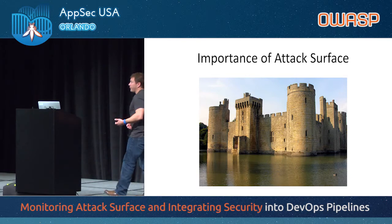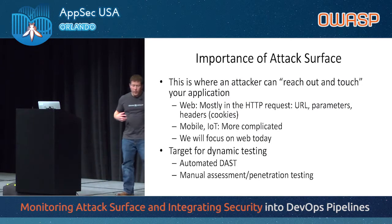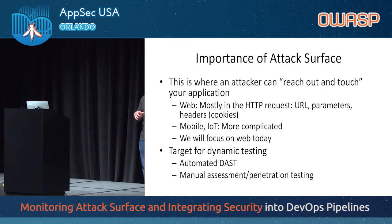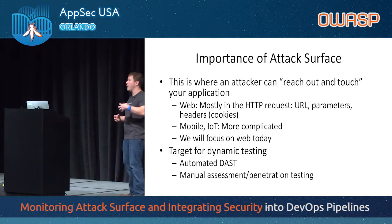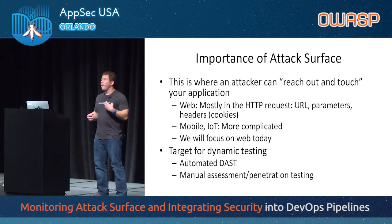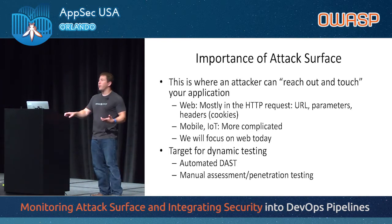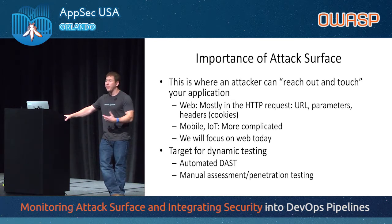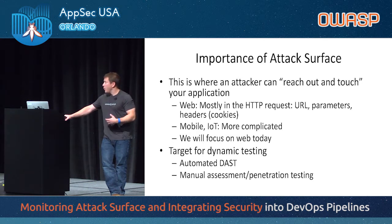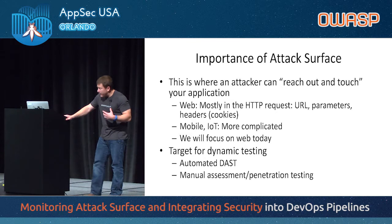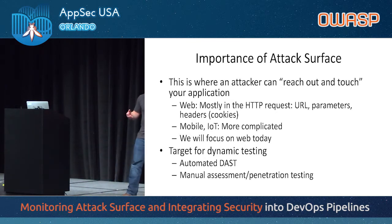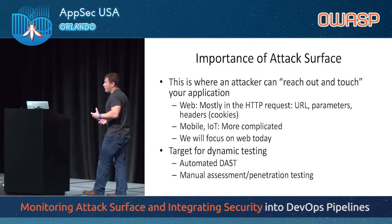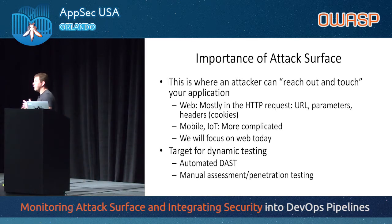I want to talk about the importance of attack surface — why is it something interesting and important? When I think about attack surface in the context of a web application, it's really where does an attacker have the ability to reach out and touch your application? Where do they have the ability to provide inputs that are going to change or affect the behavior of the application? From a web standpoint, most of this stuff is in the HTTP request — what URL is the request coming to, what are the parameters and values included, what are the headers included, most specifically cookies. If you expand the view to mobile or IoT, this gets more complicated, but our focus today is on the web application.